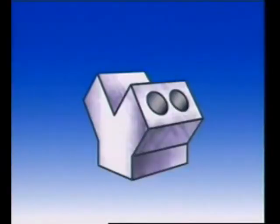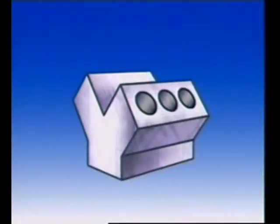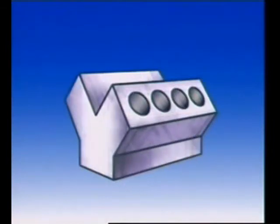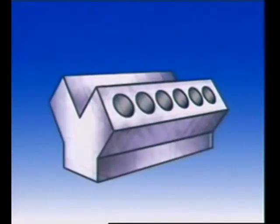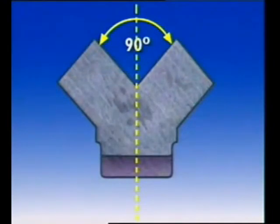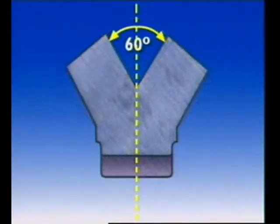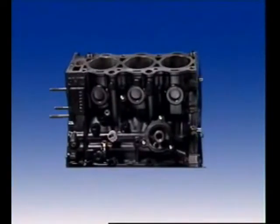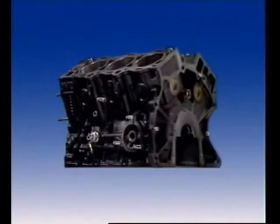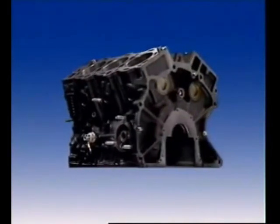In vehicle applications, the number of cylinders can vary, usually from 4 up to 12. Common angles between the banks of cylinders are 90 degrees and 60 degrees. V-type engines are wider than inline engines and may also be lower.